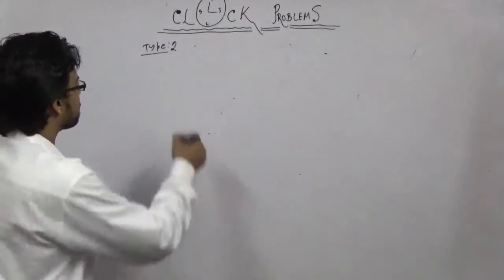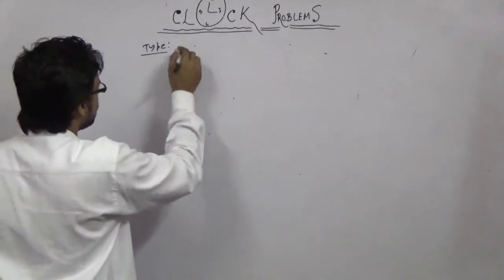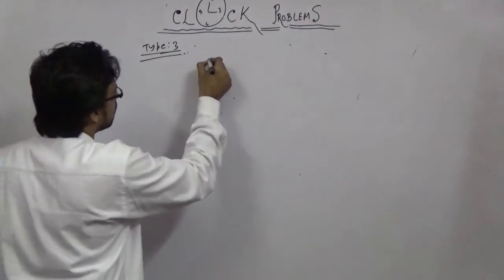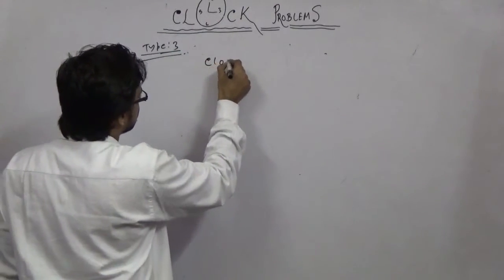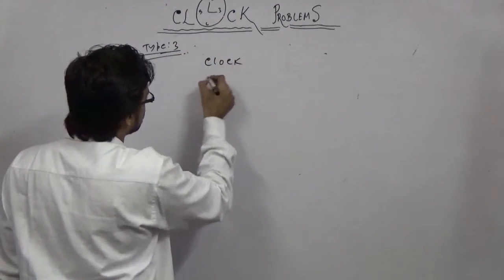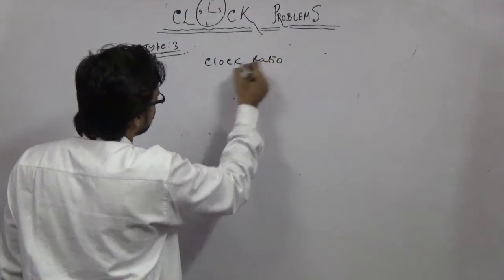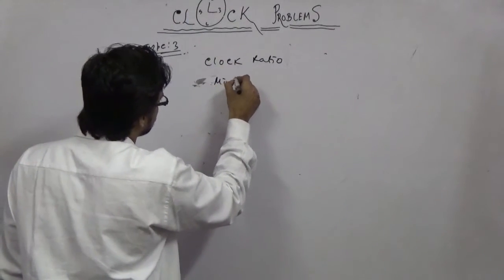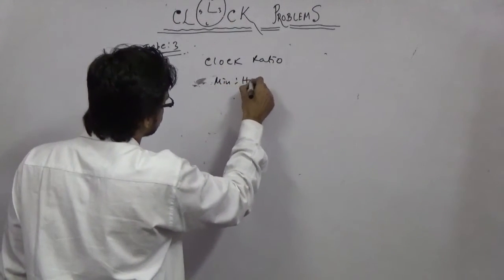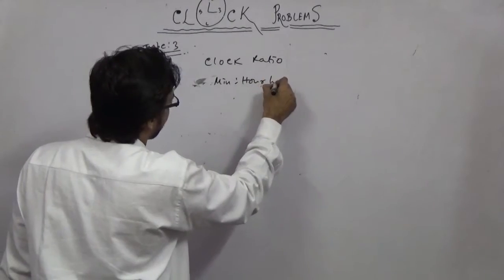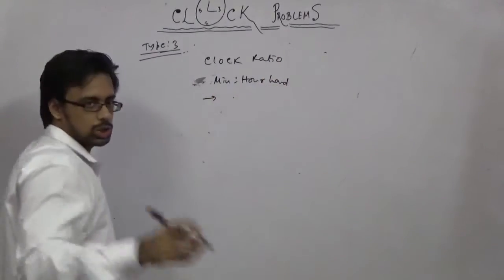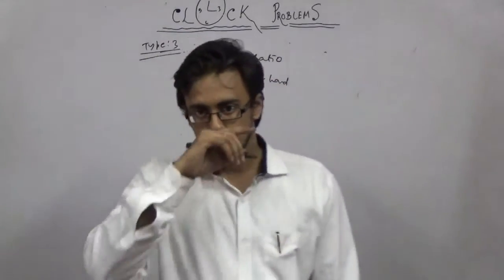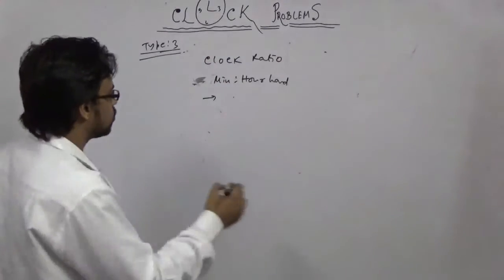Type 3: Clock ratio. What is the clock ratio? The speed ratio of the minute hand to the hour hand is 12 to 1.